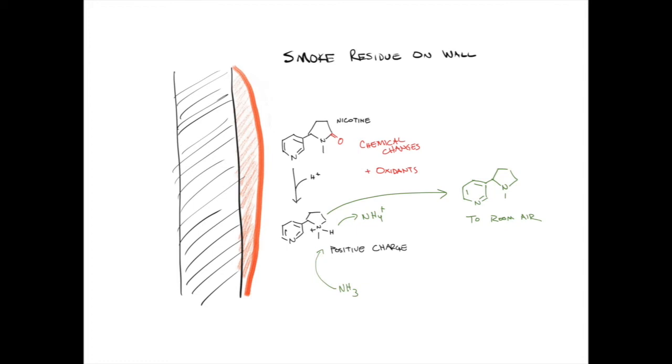Additionally, these compounds are quite reactive and can react with other chemicals in the indoor environment and become oxidized. And if molecules such as ammonia are present indoors, and we as people emit ammonia, then that ammonia can take the positive charge away and allow those molecules to release from the wall and go back into the room air.